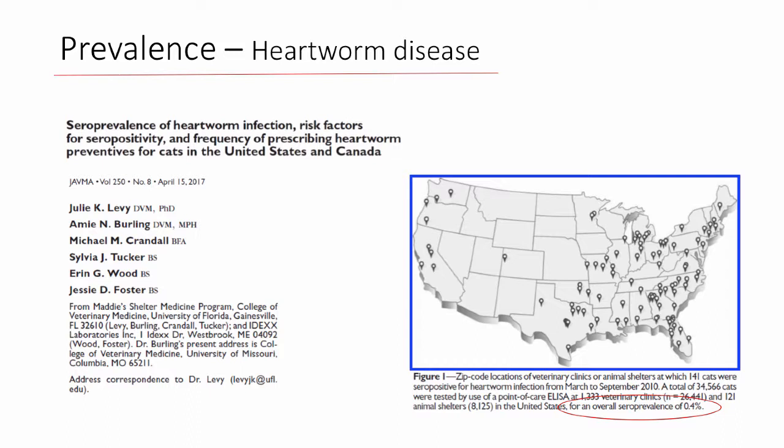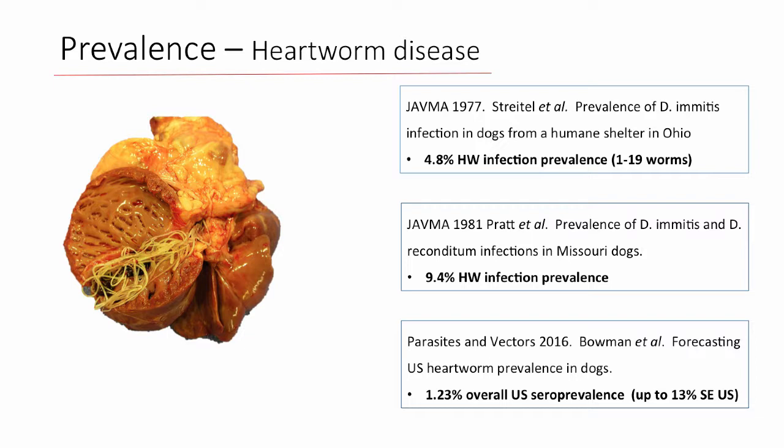Heartworm disease in dogs has a higher prevalence than in cats — maybe twice as high or more. Some older studies based on pathology found five to ten percent of dogs in shelter settings in Ohio and Missouri had heartworm disease. A 2016 paper from Dr. Bowman forecasting heartworm occurrence based on past tests found an overall U.S. seroprevalence expected to be about 1.2 percent, but very regional — in some areas of the Southeast still up to 13 percent.